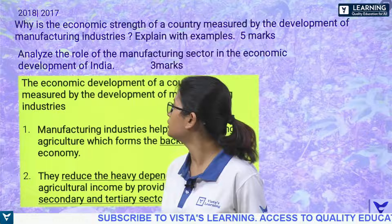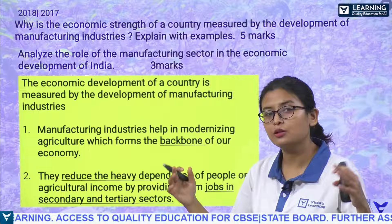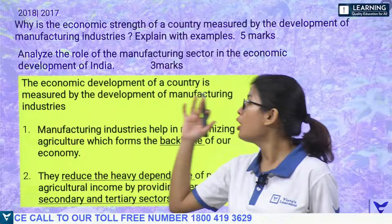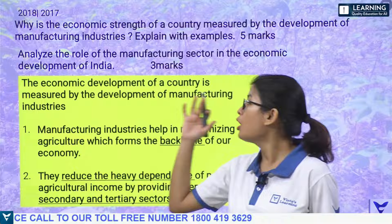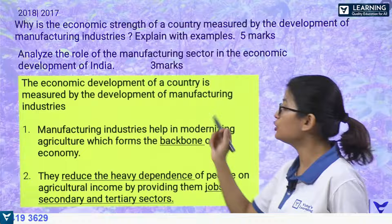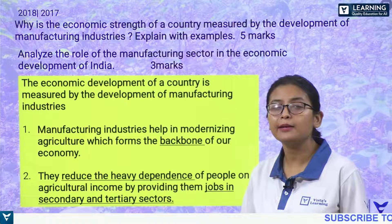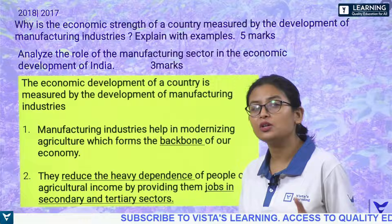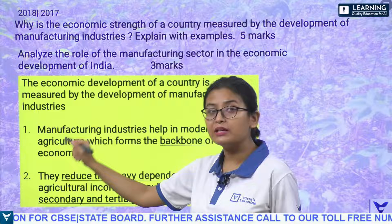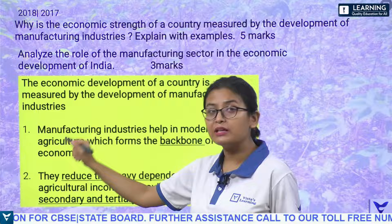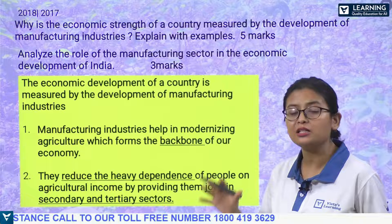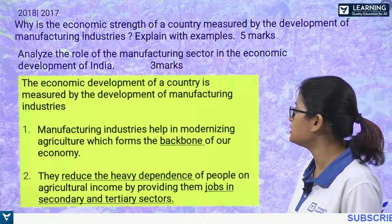With the establishment of manufacturing industries, there is growth in the economy — economic development. Economic development is measured by development of manufacturing industries. Manufacturing industries help in modernizing society. They bring urbanization and modernize agriculture since raw materials can now be turned into finished products. So we can write: modernizing agriculture and modernizing society in terms of urbanization.